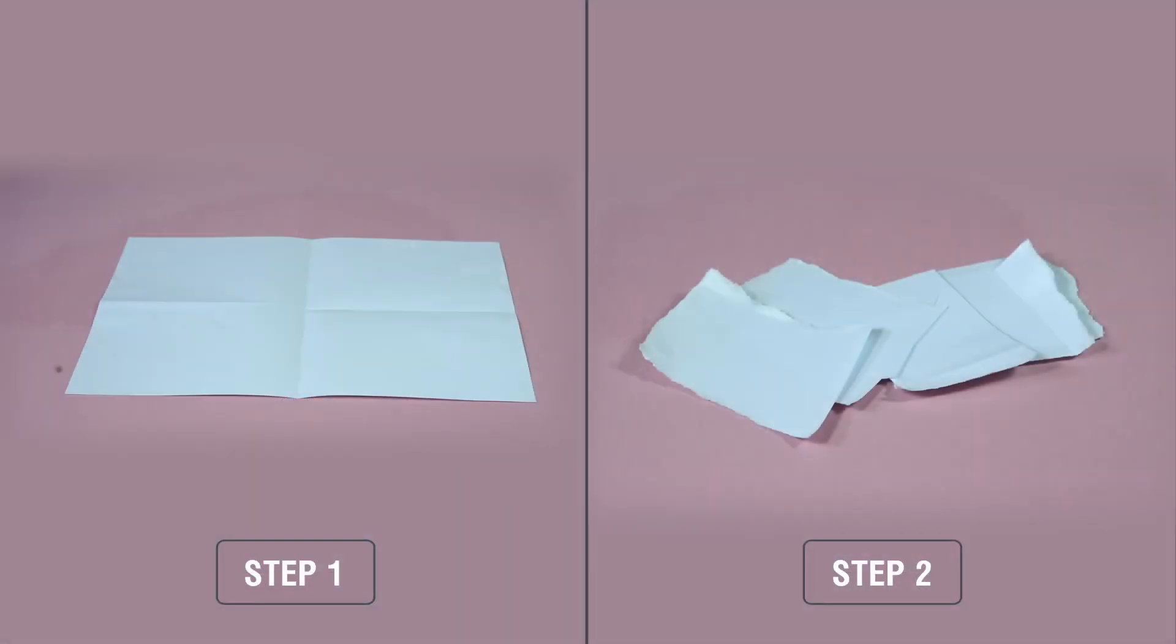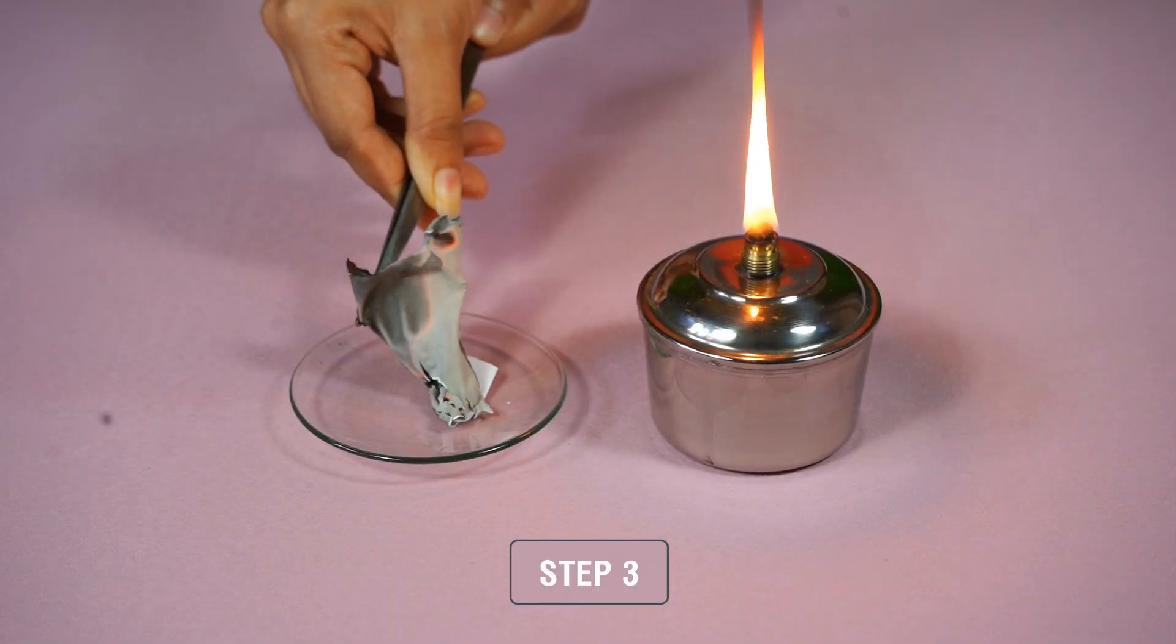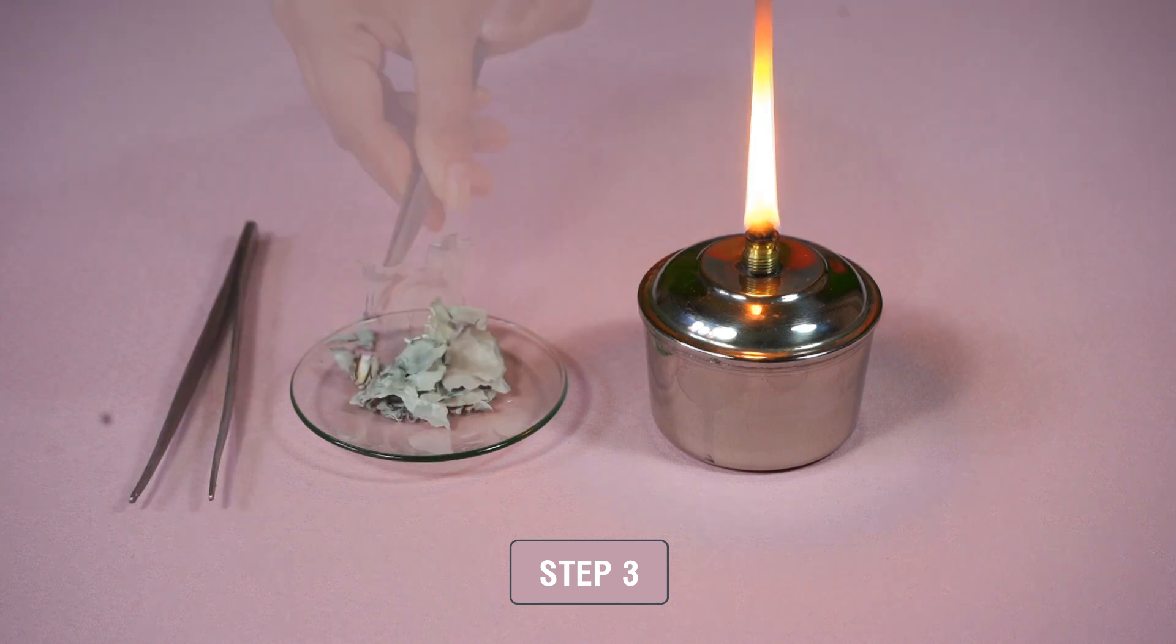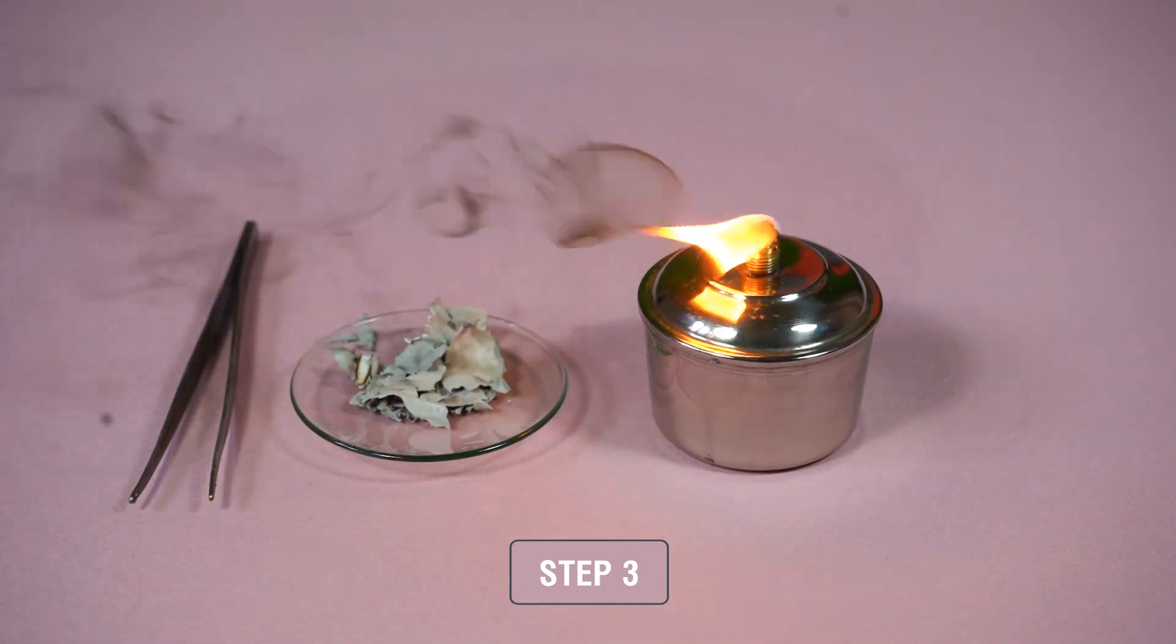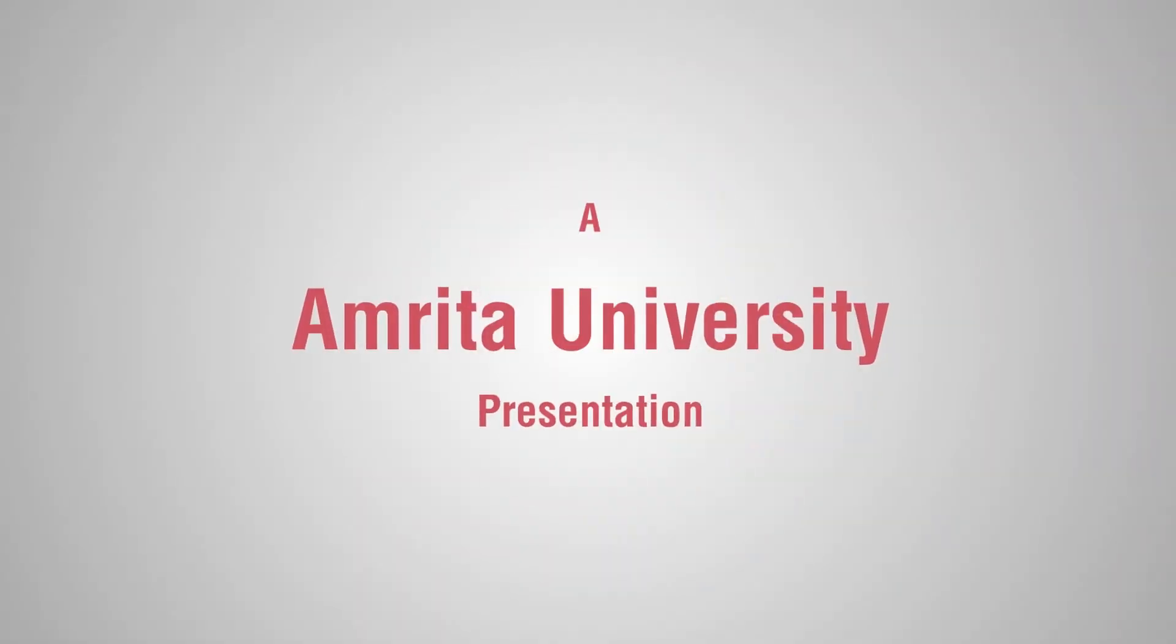Conclusion: In Step 1 and Step 2, only change in physical property was noticed and no new substance is formed. Hence, these are physical changes. However, in Step 3, by burning of paper, ash is formed. That is, a new substance is formed, hence it is a chemical change. Thank you.